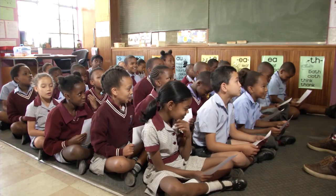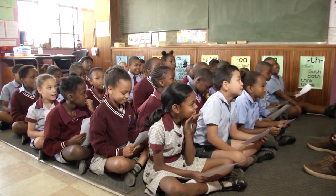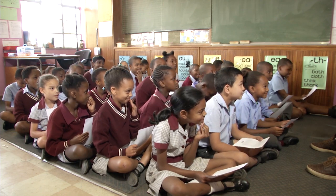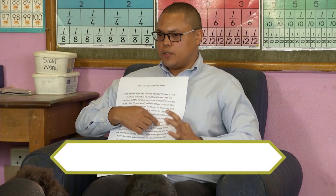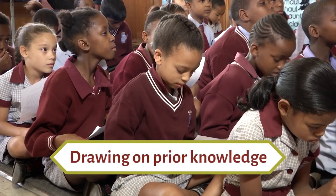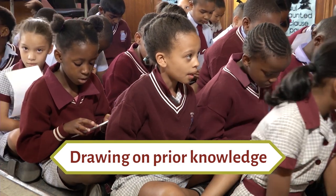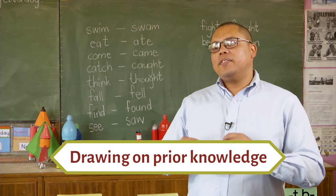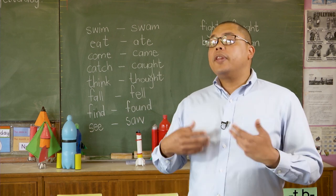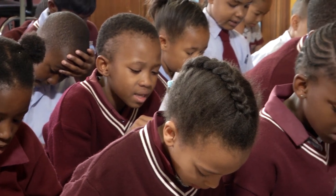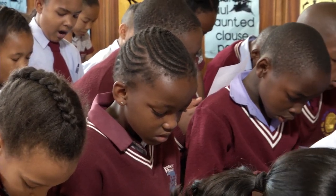Good morning, Grade 3s. Today we're going to do a lesson on past tense, and we're going to start by reading a story. I started off with a shared reading exercise. The children wouldn't have recognized what we were teaching because some of the words were actually in the story, giving them insight into what we'd do. We moved from shared reading to examples of irregular verbs, then practiced those verbs using sentence structure, and finally they completed a worksheet.